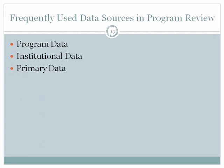Up to this point, we have examined why and how you use data in program review, but what types of data are frequently used in the process? Answering this question will lead us to more practical questions about how you collect and report data for a program review report. Here, we identify three broad types of data: program data, institutional data, and primary data.